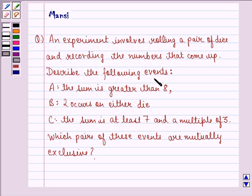Describe the following events: A, the sum is greater than 8. B, 2 occurs on either die. C, the sum is at least 7 and a multiple of 3. Which pairs of these events are mutually exclusive?